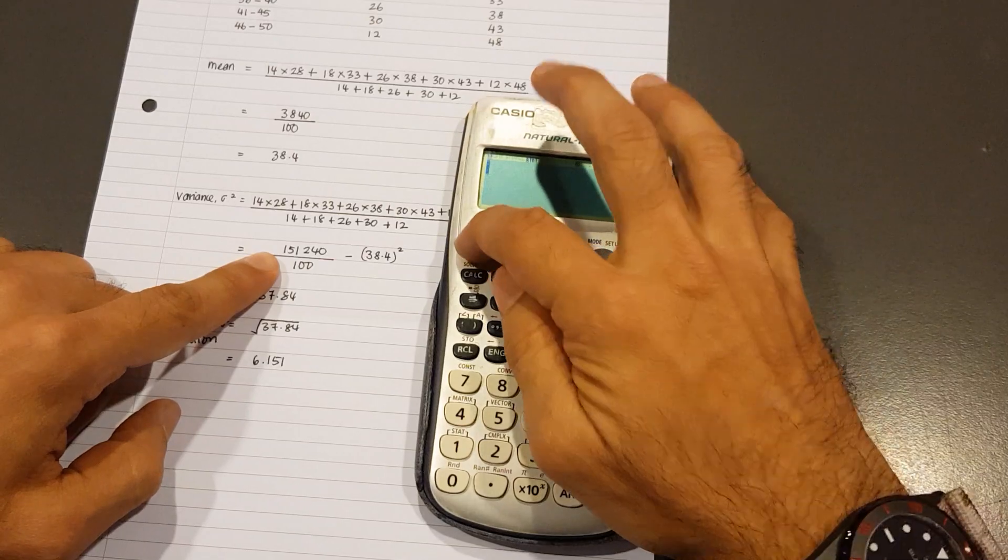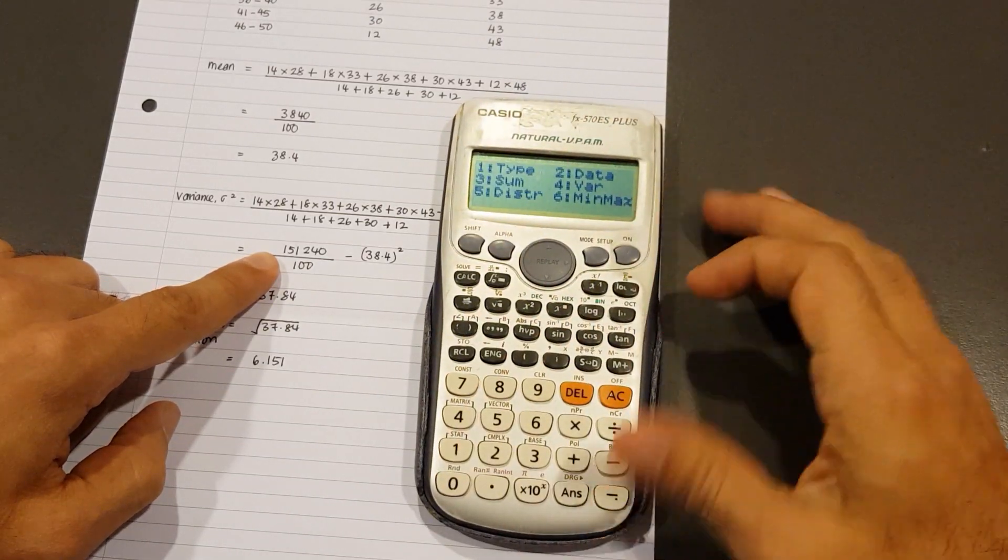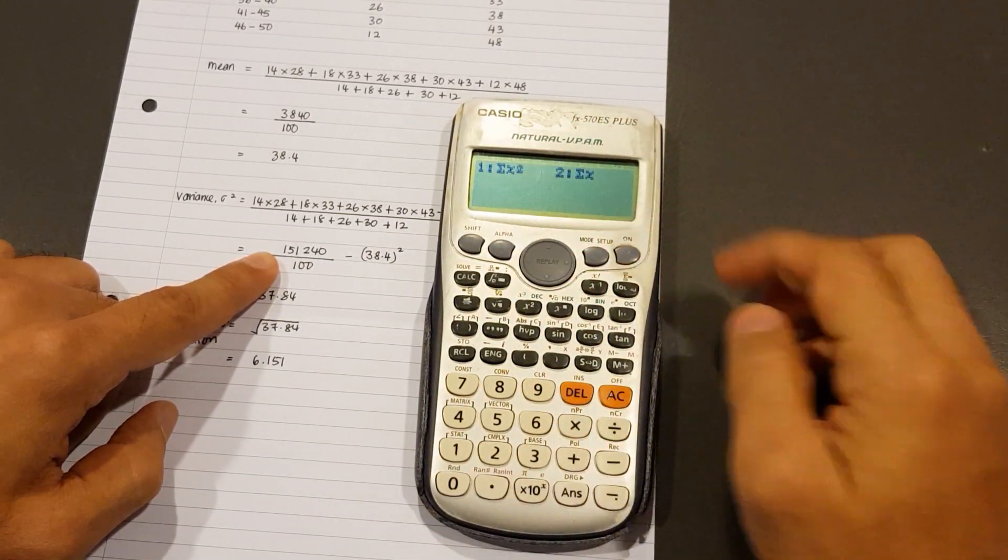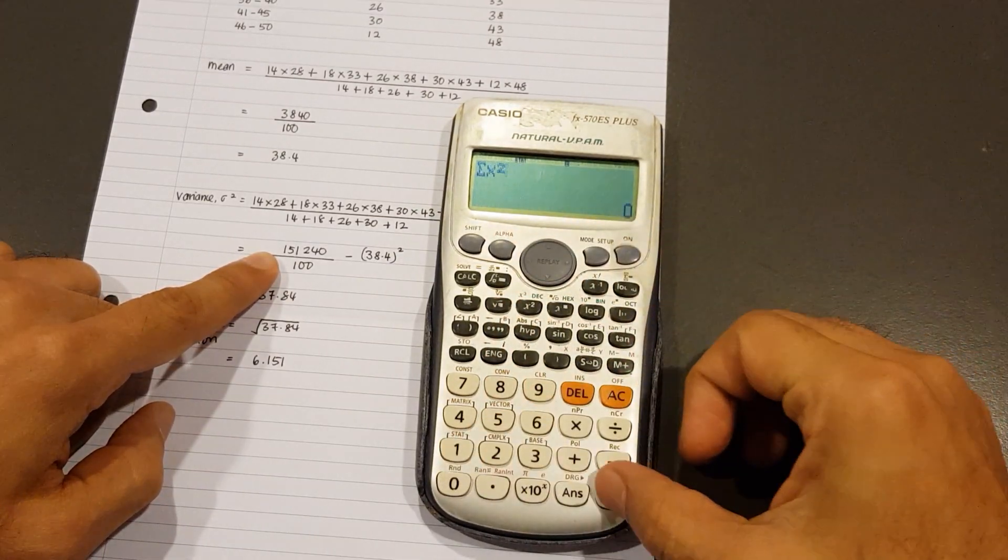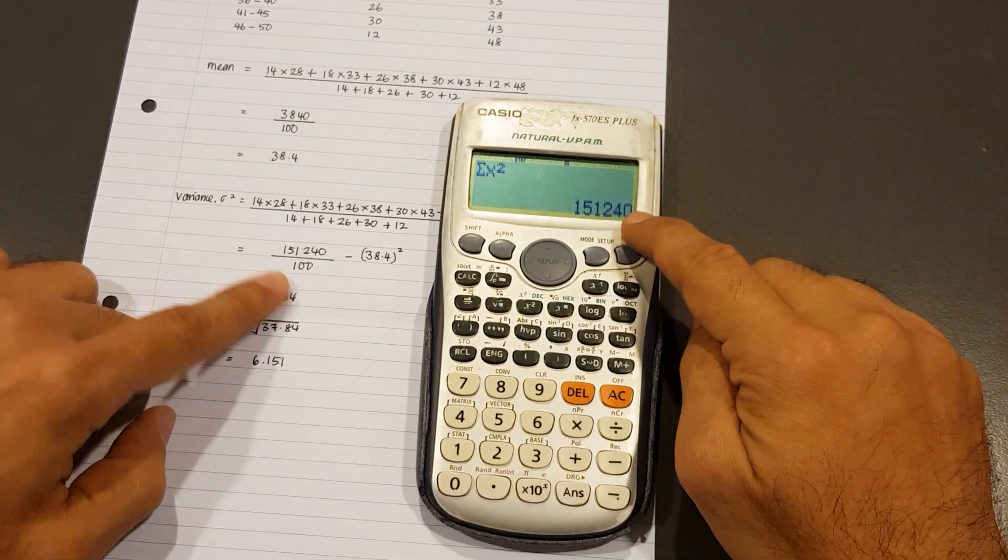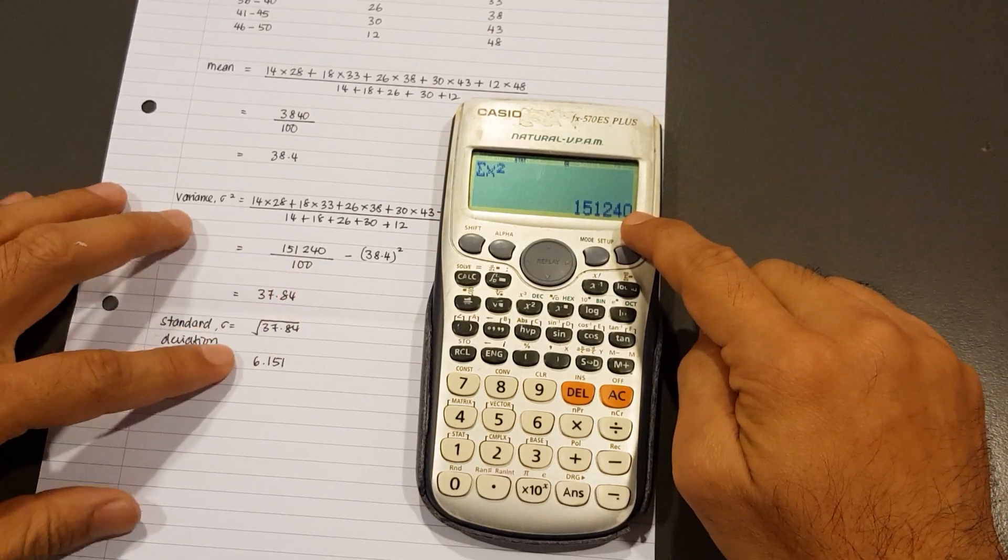I press Shift 1. We're looking for number 3. You see number 1 here, sigma X squared. So I key in 1, press equals, and I get 151,240 right there.